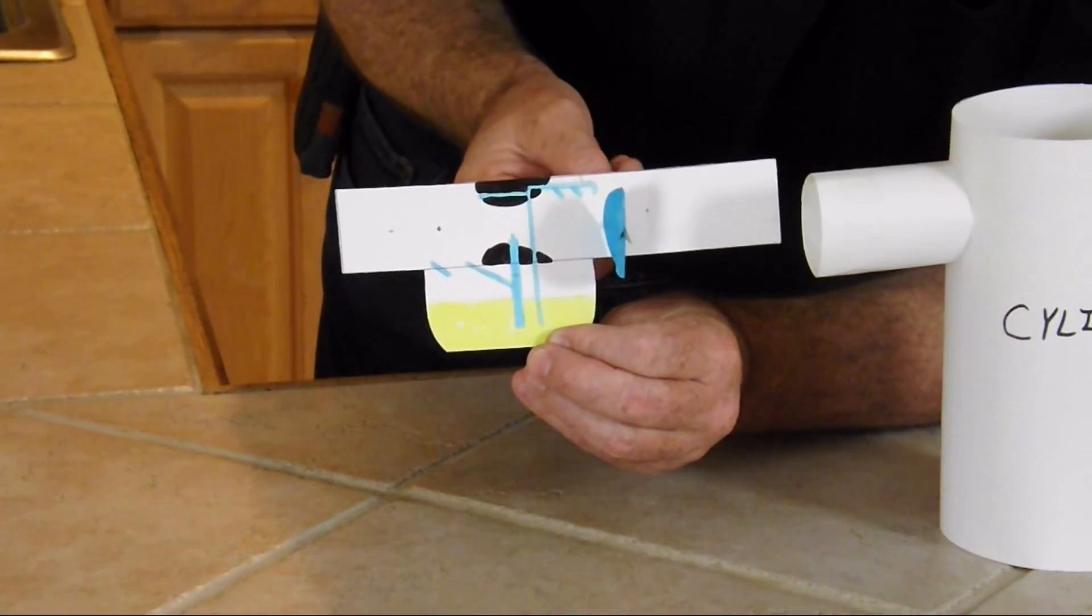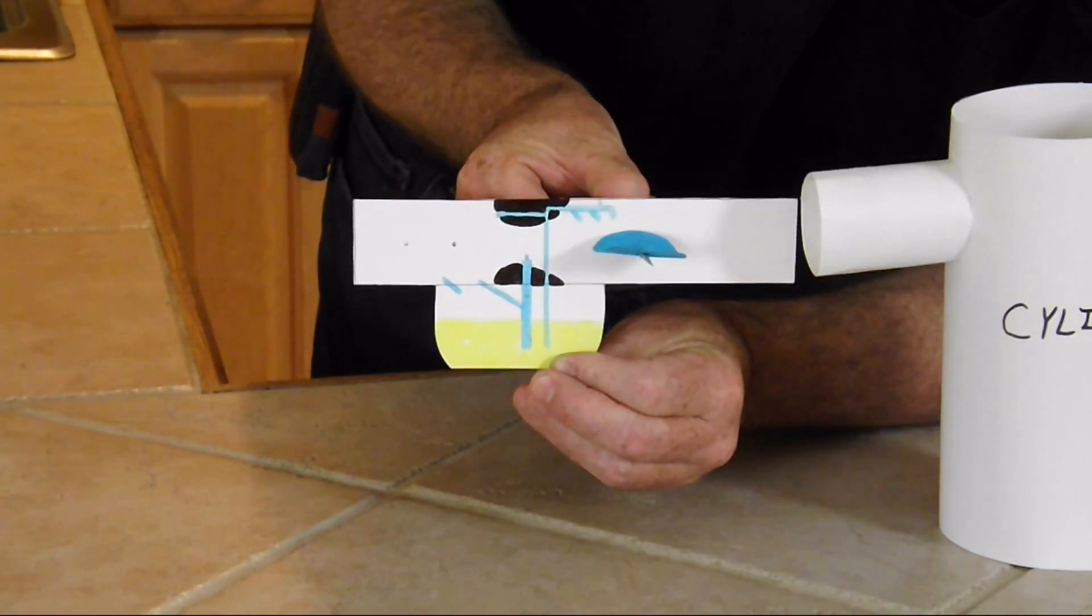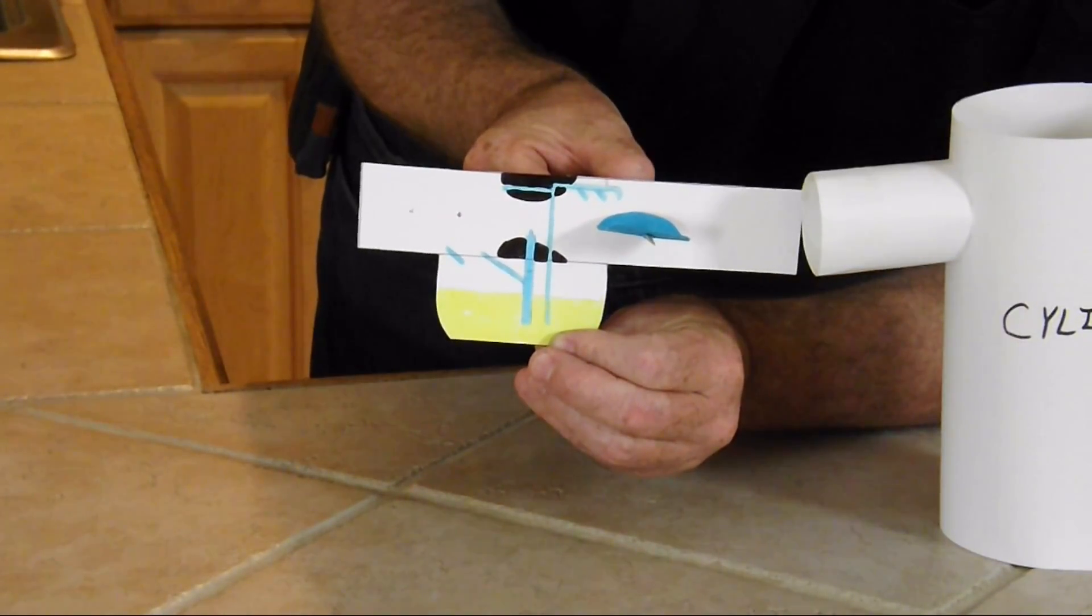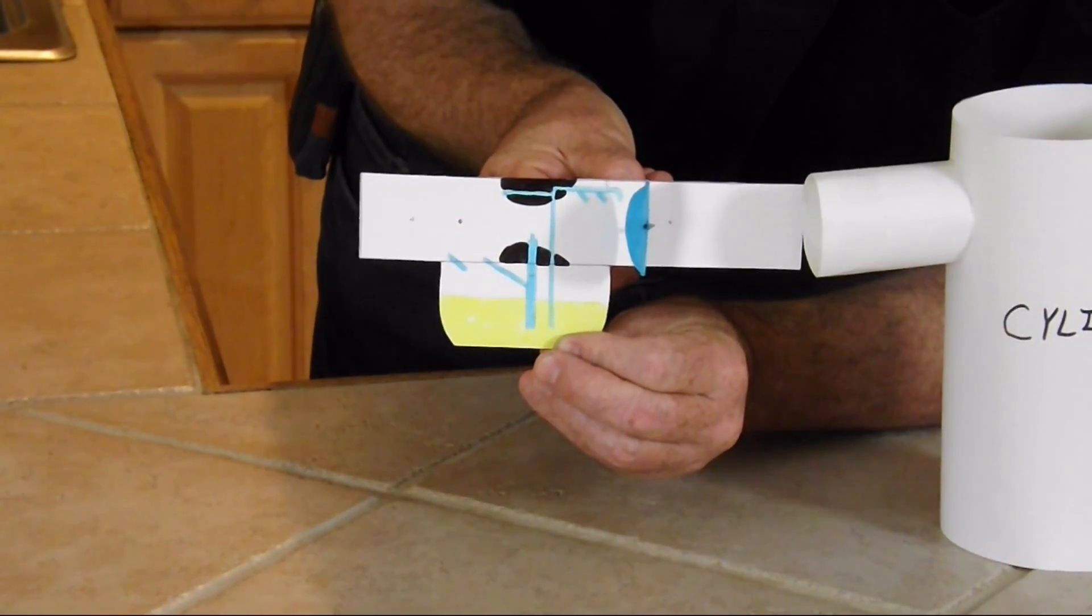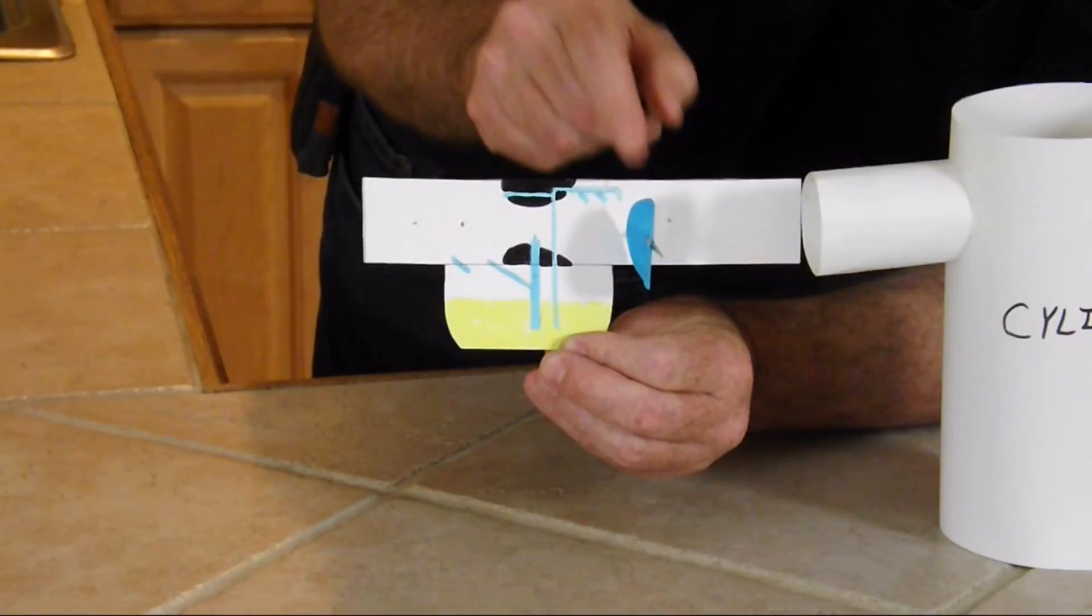But again, wide open throttle, maximum amount of air fuel. As we start to slow it down, we're going to have to have a way of getting fuel past this plate.